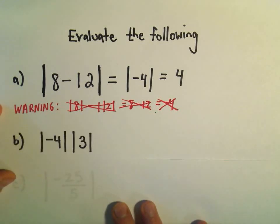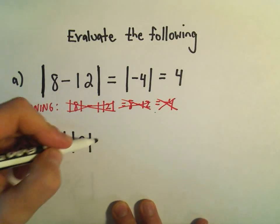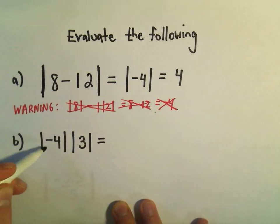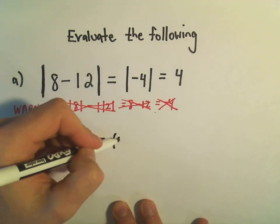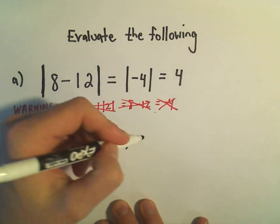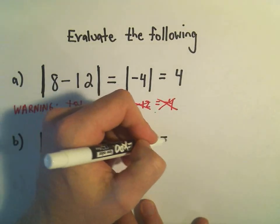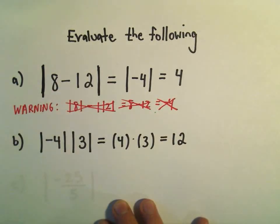Okay, so in the next one here, we have the absolute value of negative 4 times the absolute value of 3. And again, what's the absolute value of negative 4? That's simply positive 4. The absolute value of positive 3 is just itself, positive 3. And then we get 4 times 3, and that gives us our solution of 12.